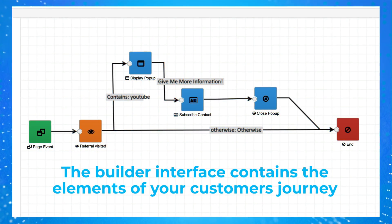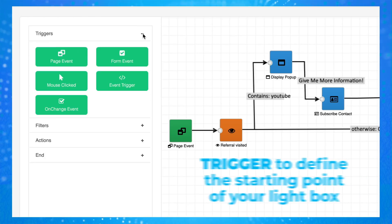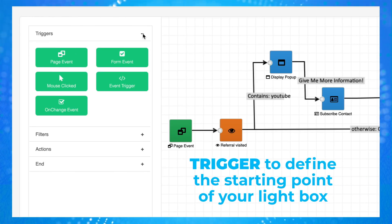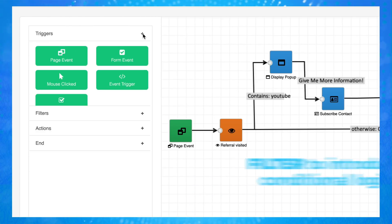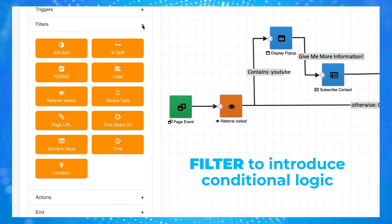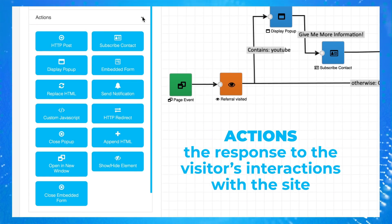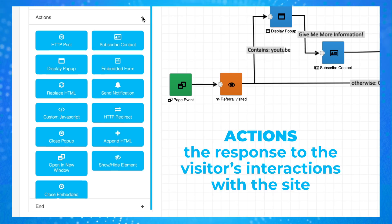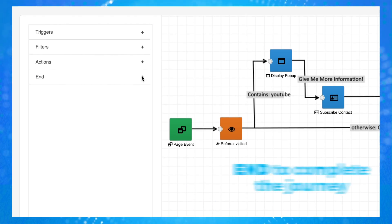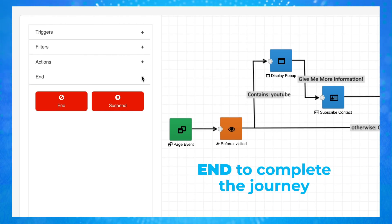The Builder interface contains the elements of your customer's journey: set up triggers to define the starting point of your lightbox, a filter to introduce conditional logic to determine when and how to display the lightbox, actions as the response to the visitor's interactions with the site, and an end to complete the journey.